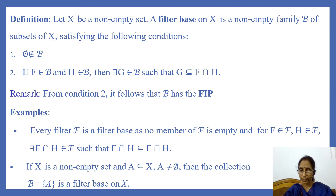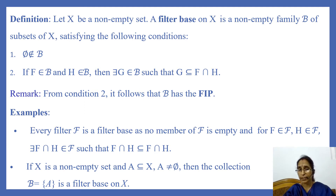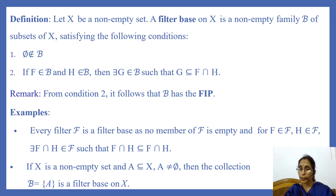The first condition is: phi does not belong to B, that is, no member of B is empty. The second condition is: if F belongs to B and H belongs to B, then there exists G belonging to B such that G is contained in F intersection H. That is, the intersection of any two members of B contains a member of B, and this can be extended to any finite number of members of B.